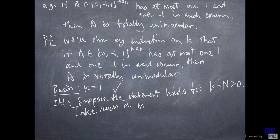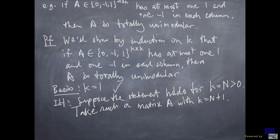So take such a matrix, A with k equal to n plus 1. So A is an n plus 1 by n plus 1 matrix, entries 0, minus 1, or 1. And each column has at most one 1, and at most one minus 1.